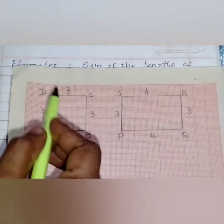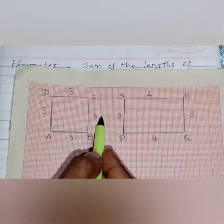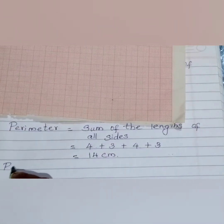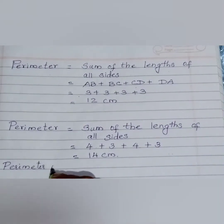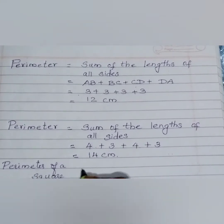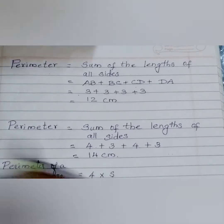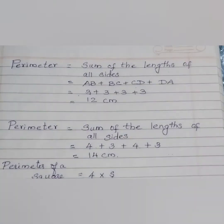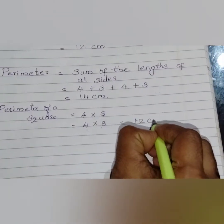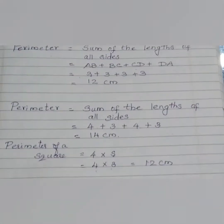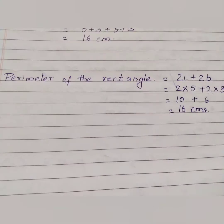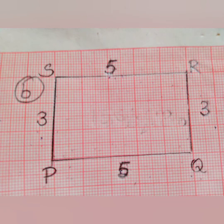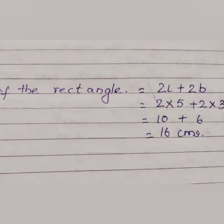Now, I will show you a trick. As you know, a square has all 4 sides equal, so there is no need to add all the sides repeatedly. We can simply multiply the side length by 4 — that is 4 into S. This is the formula for the perimeter of a square: perimeter equals 4 into S. That is 4 into 3, which equals 12. You can verify this matches our previous answer. For a rectangle, 2 times length plus 2 times breadth gives you the same answer of 16 cm.